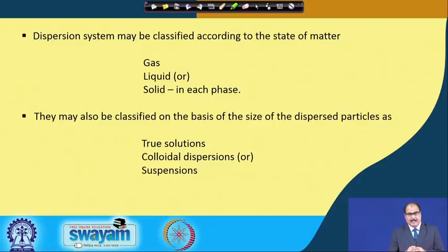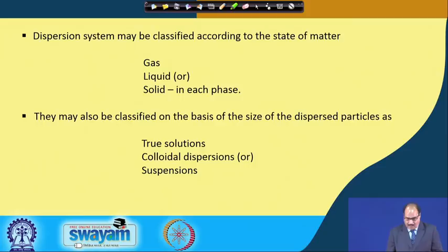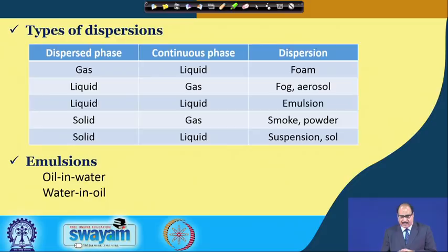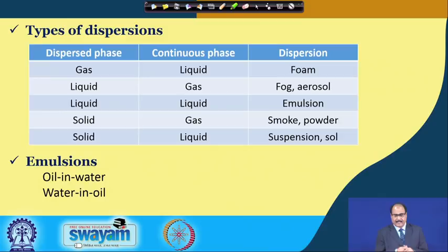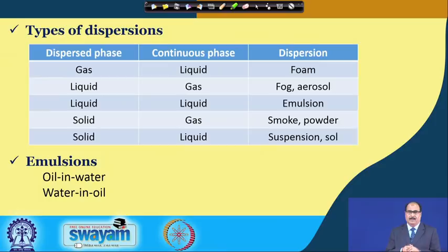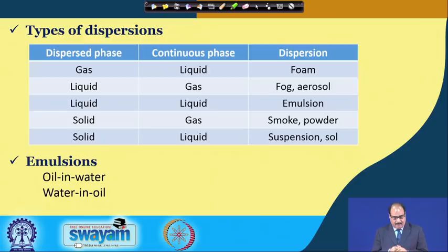Dispersions may also be classified on the basis of the size of the dispersed particle as true solutions, colloidal dispersions or suspensions. There are different types of dispersions depending upon the dispersed phase and continuous phase. If the dispersed phase is gas and continuous phase is liquid, the dispersion may be a foam. When the dispersed phase is liquid and continuous phase is gas, it may be fog or aerosol. When both phases are liquid, it may be an emulsion. When the dispersed phase is solid and continuous phase is gas, it may be smoke or powder. If the dispersed phase is solid and continuous phase is liquid, the dispersion may be a suspension or a sol.